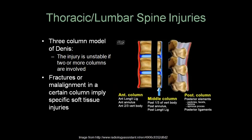Now we'll move on to thoracic and lumbar spine injuries. The three-column model of Denis divides the spine into three columns: the anterior column — the anterior two-thirds of the vertebral body; the middle column — the posterior one-third of the vertebral body; and the posterior column — the posterior elements. The injury is considered unstable if two or more columns are involved. Fractures in a given column imply specific soft tissue injuries: anterior longitudinal ligament and anterior annulus in the anterior column; posterior annulus and posterior longitudinal ligament in the middle column; and posterior ligaments in the posterior column. Remember that these soft tissues cannot be seen on x-rays — only osseous structures are visible.